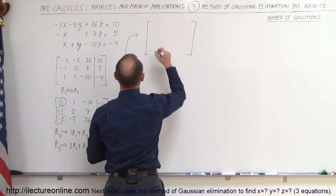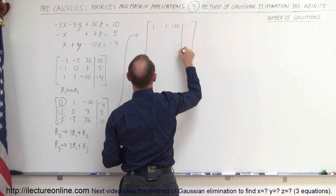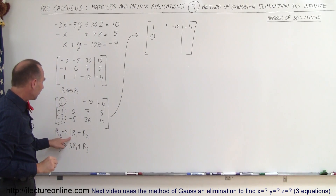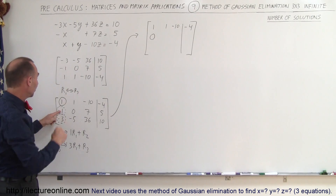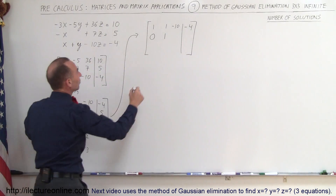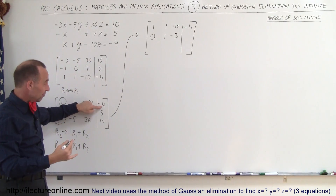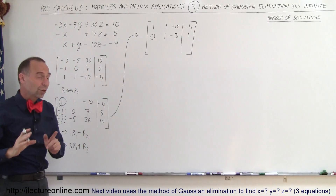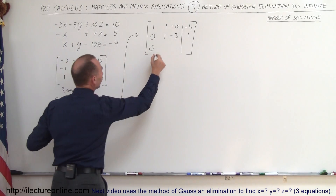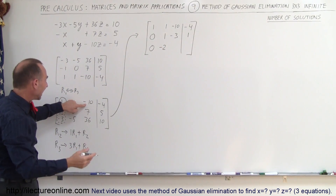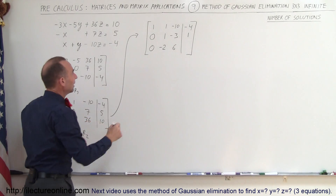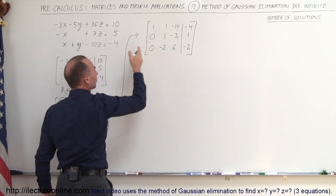The first row doesn't change: 1, 1, negative 10, and negative 4. For the next row: 1 times 1 plus negative 1 gives 0. 1 times 1 plus 0 gives 1. 1 times negative 10 plus 7 gives minus 3. And 1 times negative 4 plus 5 gives positive 1. For the third row: 3 times 1 plus negative 3 gives 0. 3 times 1 plus negative 5 gives negative 2. 3 times negative 10 plus 36 gives positive 6. And 3 times negative 4 plus 10 gives negative 2. Now we have a 1 up here and zeros there, so we continue.